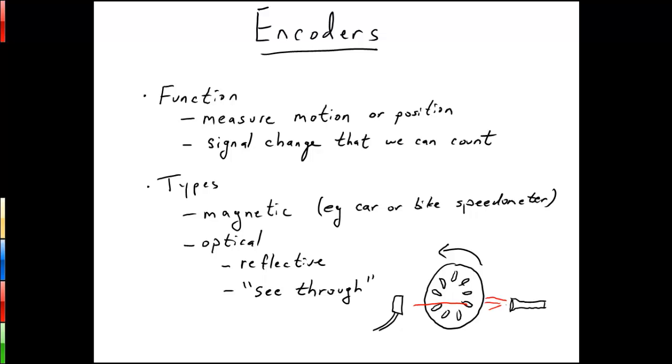Now there are many types of encoders. A couple examples are, for example, a magnetic encoder that you might find on a car or bike speedometer. Every time the wheel makes one revolution, a magnet passes by a sensor and induces some kind of current in that sensor. The sensor sends a signal to a microcontroller and we count every time the shaft passes by the particular sensor and we can figure out how fast we're going.